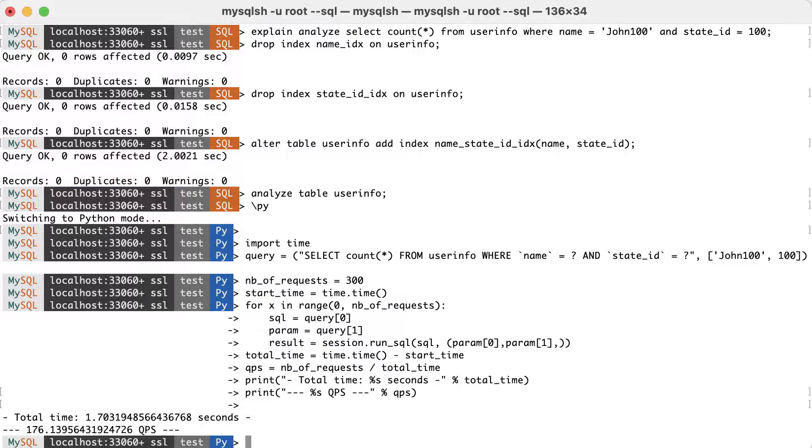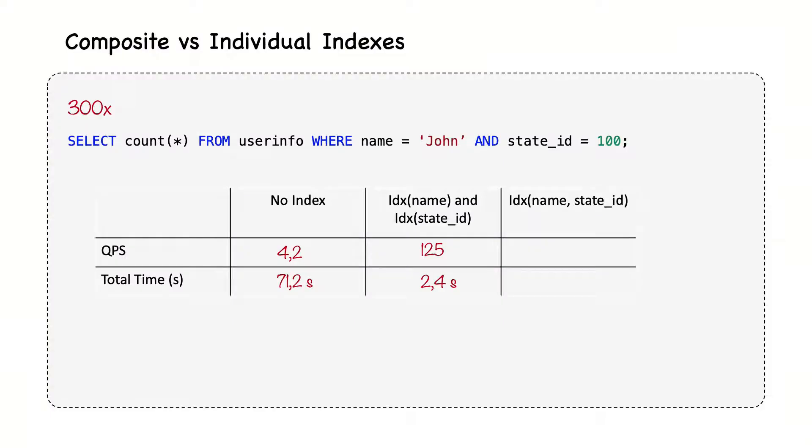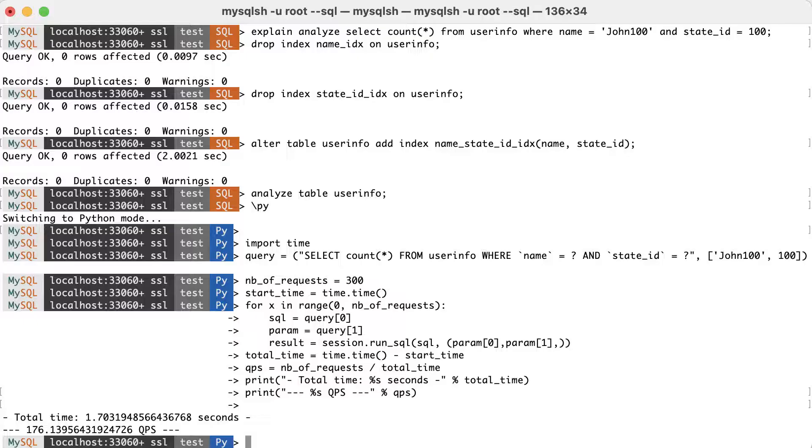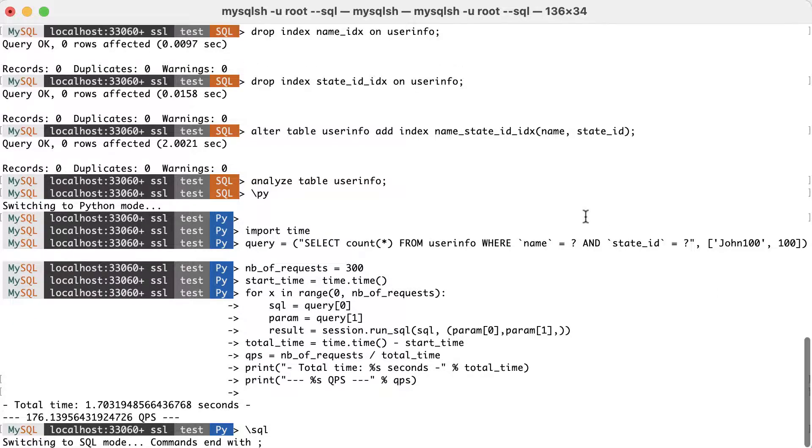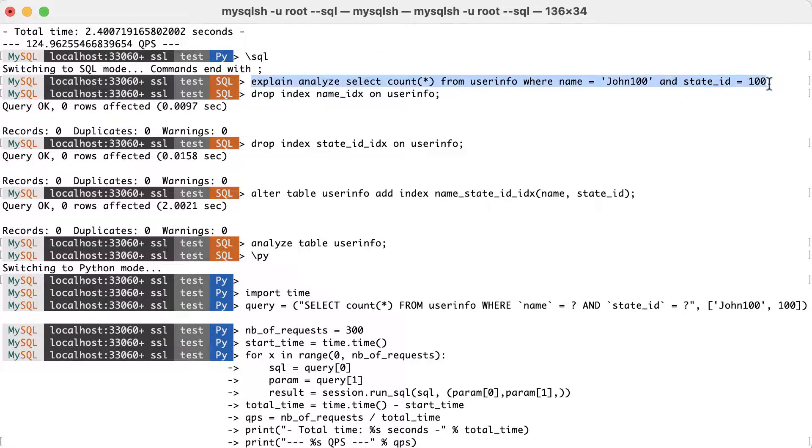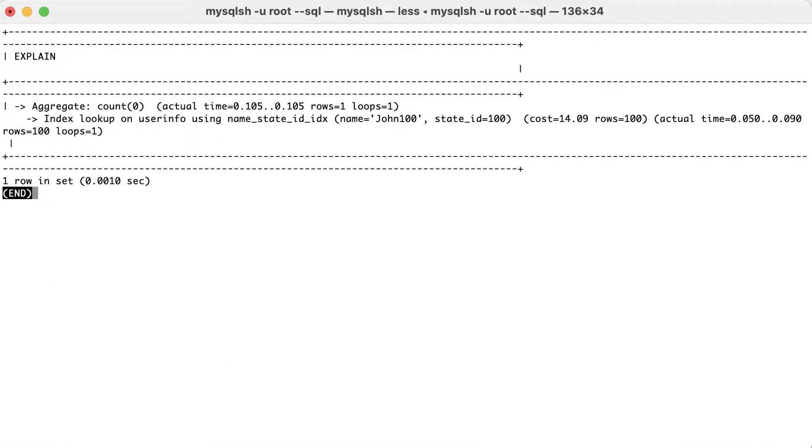And we note the results. Again, if we check the internal execution of the query, we see that MySQL has chosen a simple index lookup for the query, and the number of rows are correctly estimated.